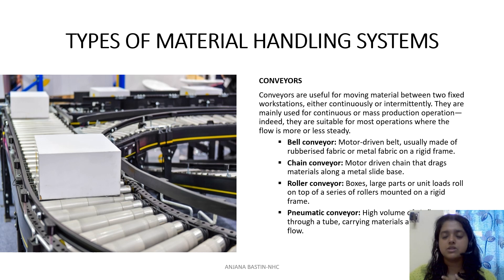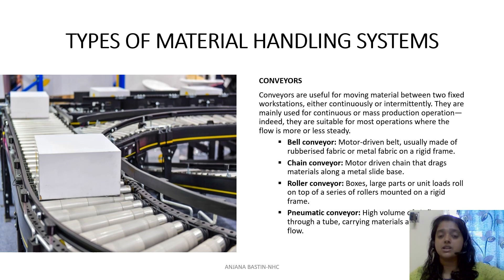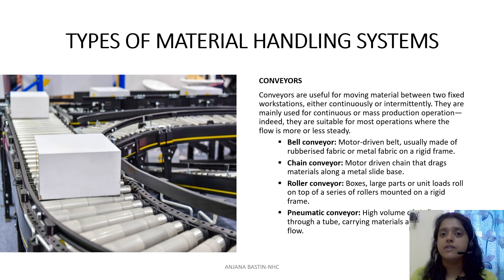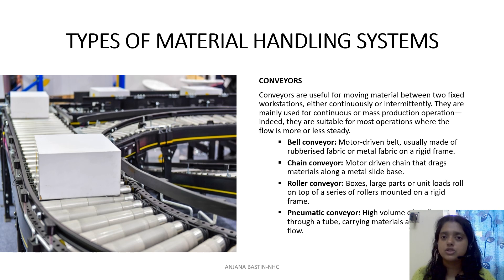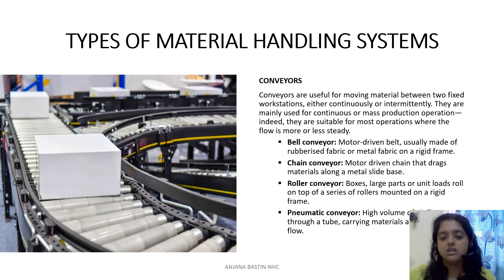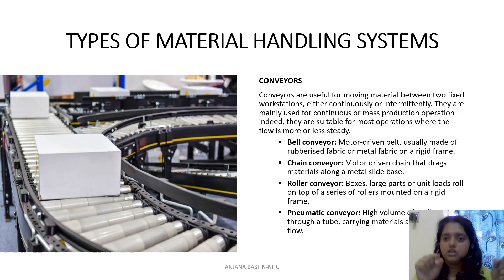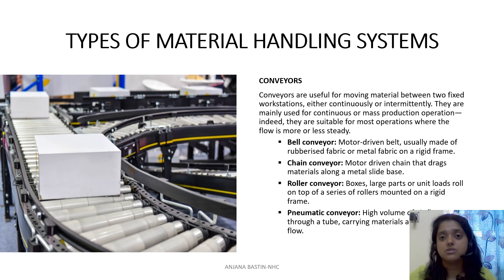Even when you check in — say traveling from Kochi to Bangalore — when you give your baggage other than your hand baggage, they are placed on a conveyor belt. That type is called a belt conveyor. Then we have chain conveyor, which you normally see in railway stations and factories, wherein instead of a belt, you have a chain which pulls in all the material. These chains are normally motor driven, using very resistant chains to pull material from one point to another.